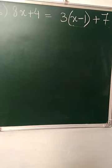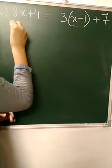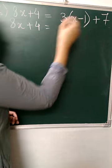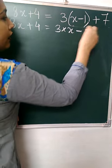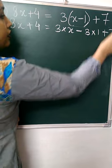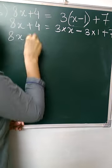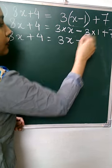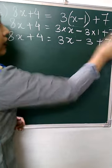Starting with the 6th one. As you can see, there are variables on both sides and also a bracket. First and foremost, we are going to remove this bracket. So 8x + 4 = 3 into x and 3 into 1, plus 7. This becomes 3x and 3 ones are 3, plus 7.